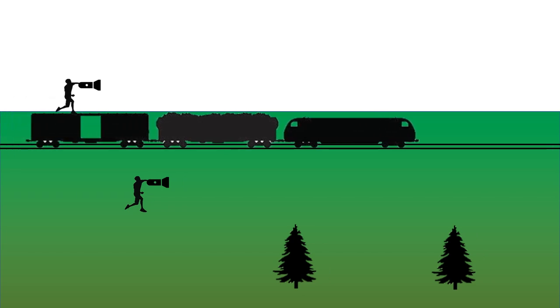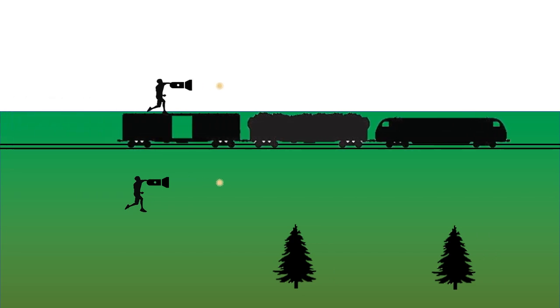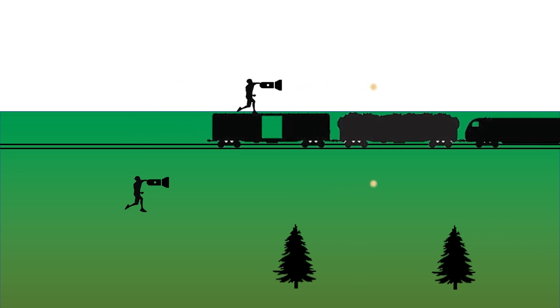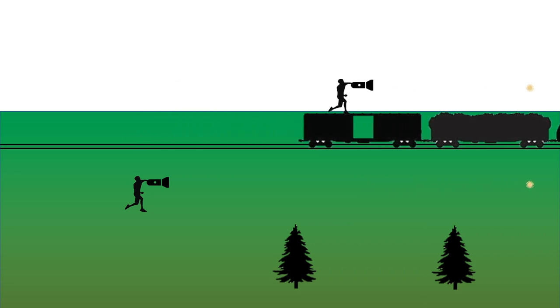But here's the big shock. An observer on the ground will also perceive the light as moving 300 million meters per second. Unlike the ball, the light energy doesn't get a boost from the speed of the train that makes it go faster.